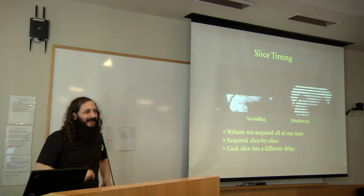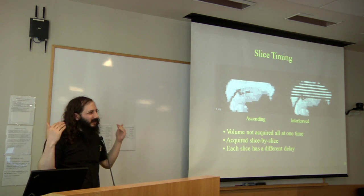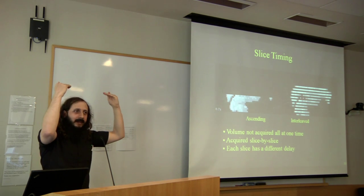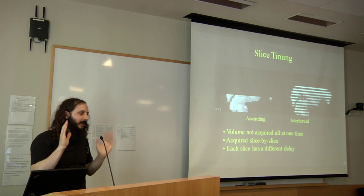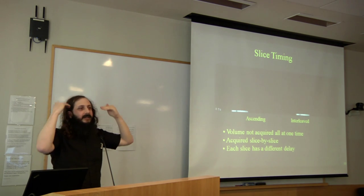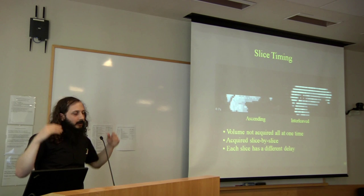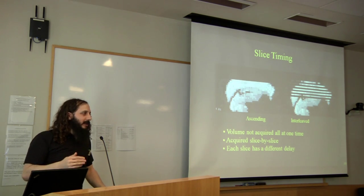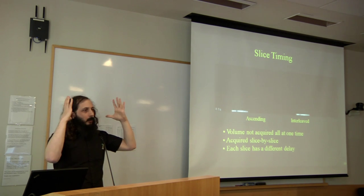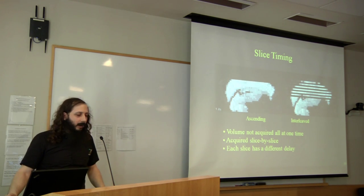The next pre-processing step is slice timing correction. This is important because each EPI slice is acquired one at a time sequentially over the brain, and each slice takes about 16-17 milliseconds to acquire. You can acquire them in ascending order, but this has disadvantages due to slice profile imperfections and slice crosstalk. Most people today acquire slices in an interleaved order — acquiring all odd slices first, then going back for all even slices — which reduces vulnerability to slice crosstalk. The problem is that each region of the brain is therefore sampled at a different time, which our analysis needs to account for.